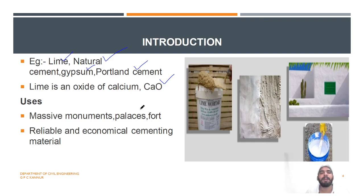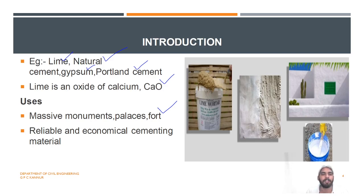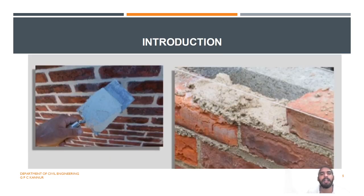In massive monuments, palaces, and forts, there are lots of constructions that have already taken place and which stand as monuments, palaces, and forts. In ancient times, we were not using cement. Instead of cement, we were using lime as a cementic material — a reliable and economical cementic material. Lime was used as a binding material by which two stones or two bricks can be connected. Before the discovery of cement, we were using lime.